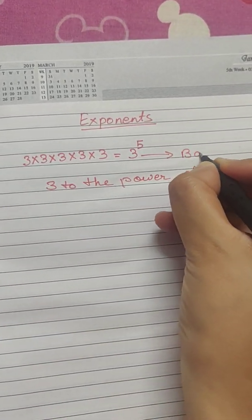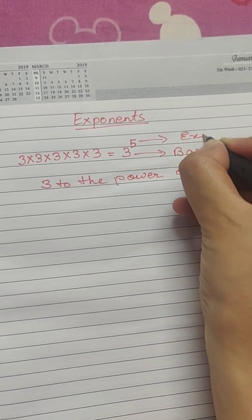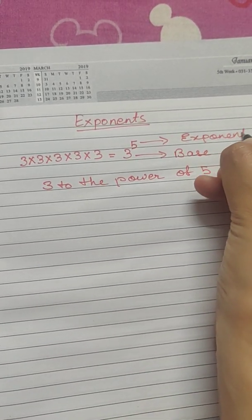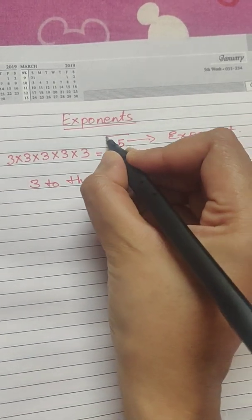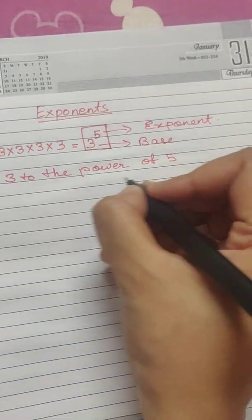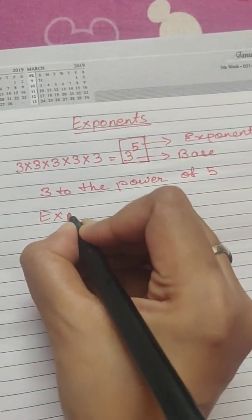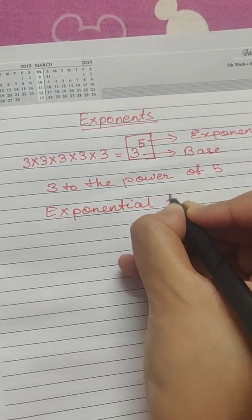3 is the base and 5 is known as the exponent. And representing a number in this particular way is known as exponential form.